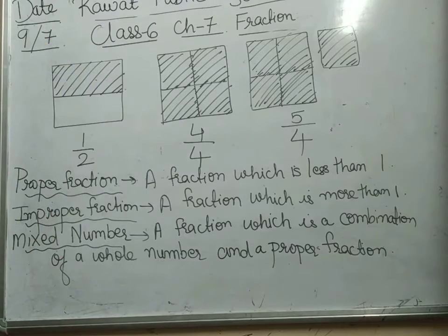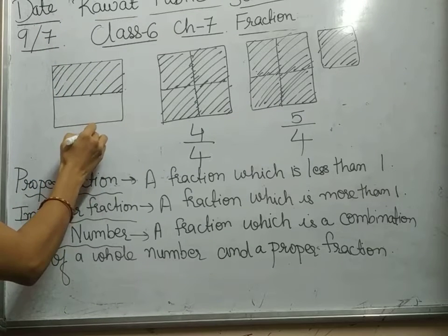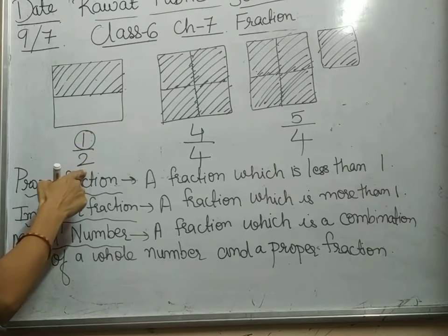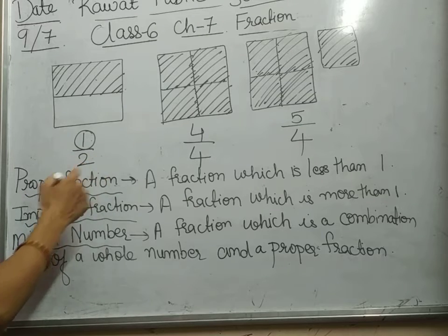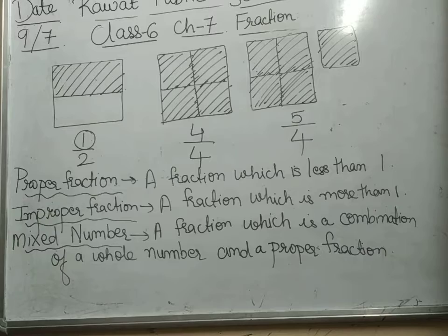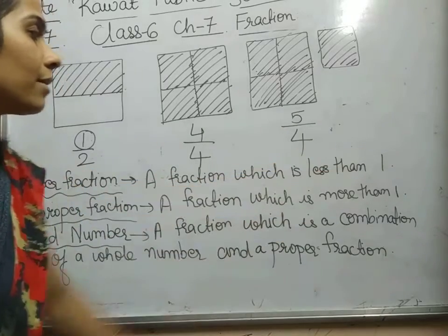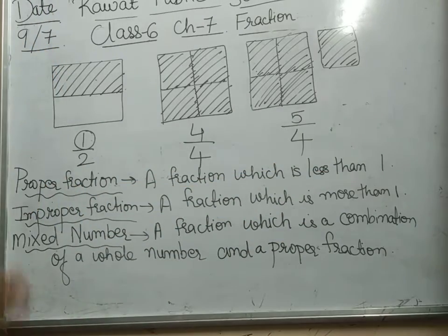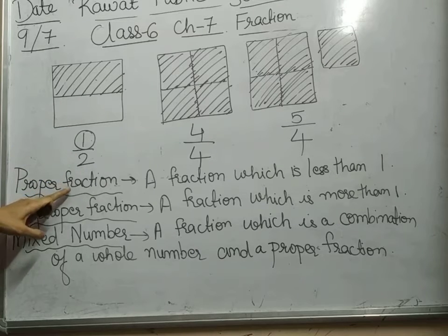As you see, here one by two — this numerator is smaller than denominator. Yes, it is smaller than denominator. So, it is a proper fraction. A fraction which is less than one. Here one by two is smaller than one. Therefore, it is called proper fraction.